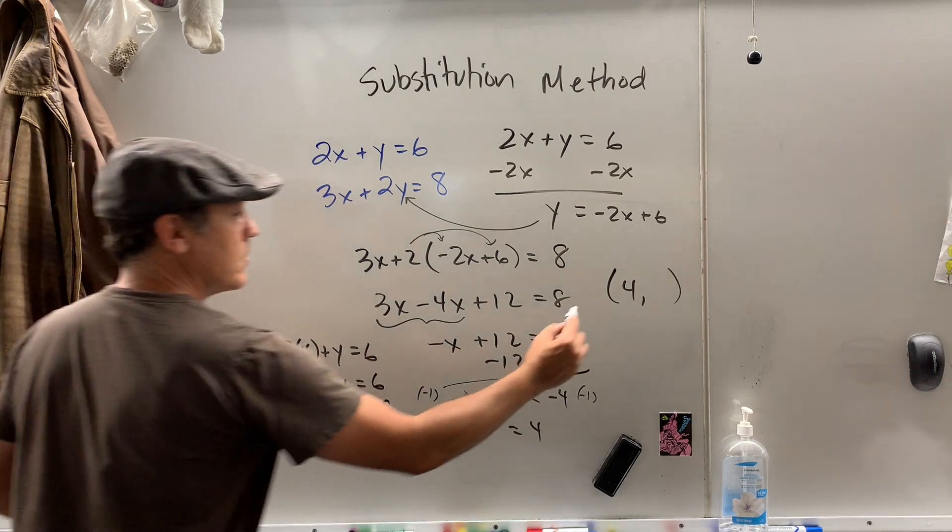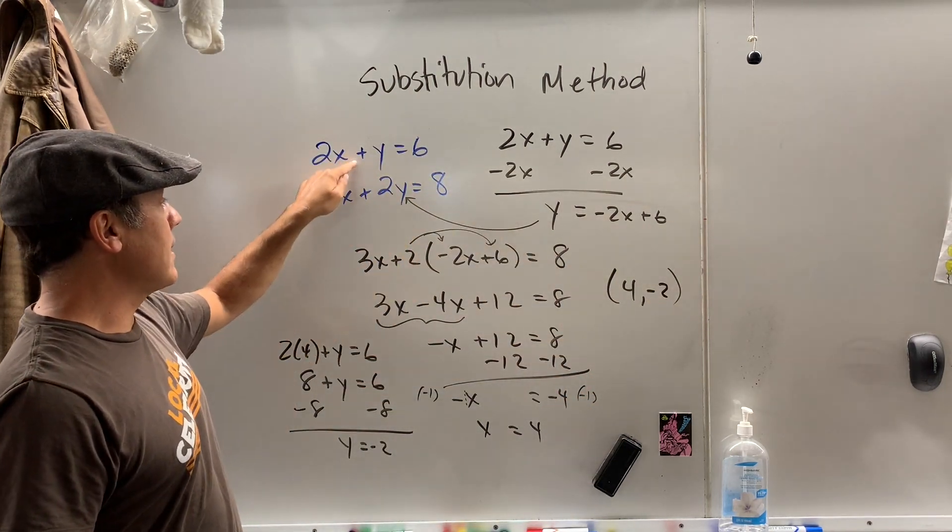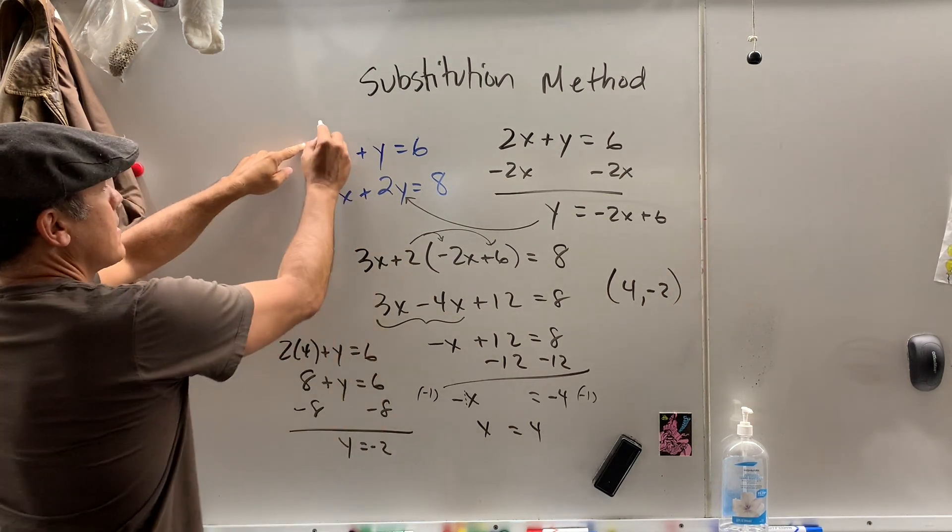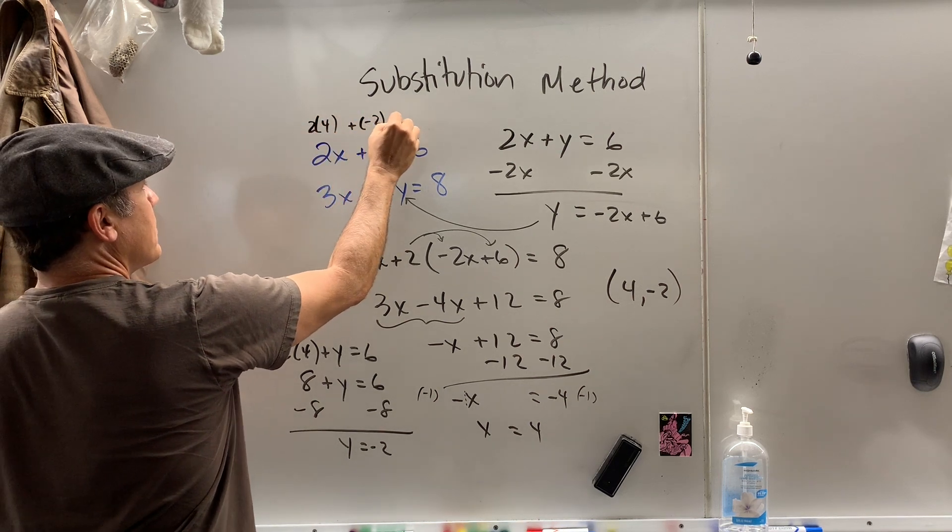y is equal to negative 2. So the ordered pair (4, negative 2) will satisfy each of these equations. How do we know? Well, let's check it. Let's come up here. 2 times 4 plus a negative 2. Does it equal 6?